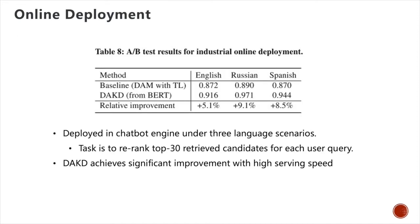We have deployed our DA-KD method in our chatbot engine in Alibaba under three language scenarios: English, Russian, and Spanish. The scenario is as follows: for each user query, the chatbot engine retrieves the top 30 relevant questions, and our method is used to find the most relevant question and fetch the corresponding answer output. We find that our method has better performance in all three application scenarios than the previously online deployed methods. Meanwhile, the serving latency and throughput of our method are nearly identical to the previous online method, showing our method is both effective and efficient for this online application.